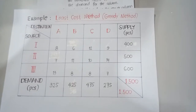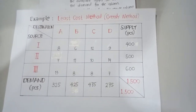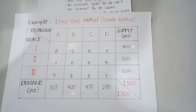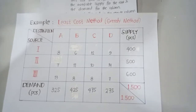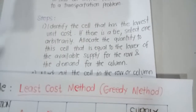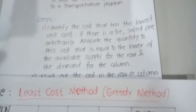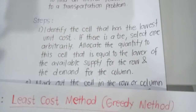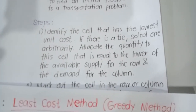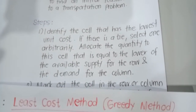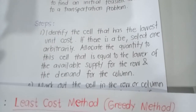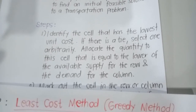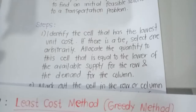In order to be guided in doing the least cost method, we need to strictly follow the steps. Step one: identify the cell that has the lowest unit cost. If there is a tie, select one arbitrarily.